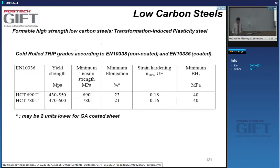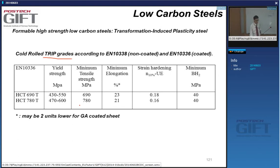Looking at some TRIP grades: these materials can easily achieve close to 700 or 800 MPa in tensile strength with a minimum elongation of about 23%, and they also turn out to be quite good in terms of bake hardening.